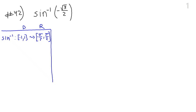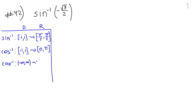This means that the inverse sine function takes a ratio between negative 1 and 1 and outputs an angle between negative pi over 2 and pi over 2. The inverse cosine function maps a value from negative 1 to 1 to an angle from 0 to pi. The inverse tangent function takes any real number and produces an angle between negative pi over 2 and pi over 2. Remembering the domains and ranges of inverse functions is very useful.